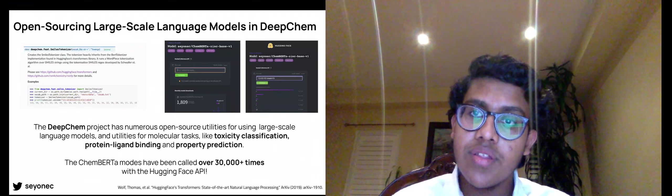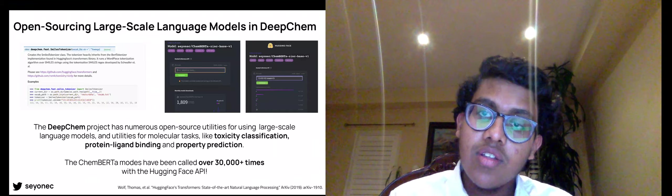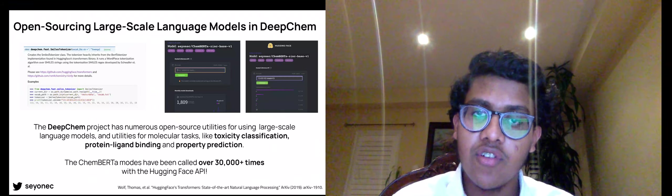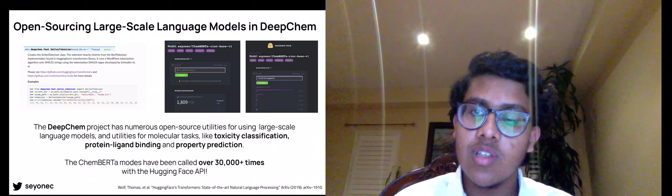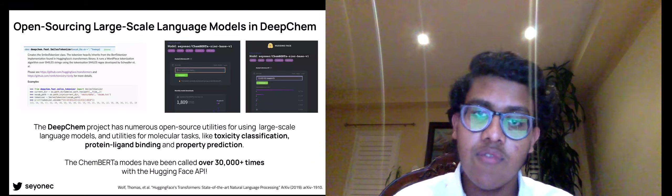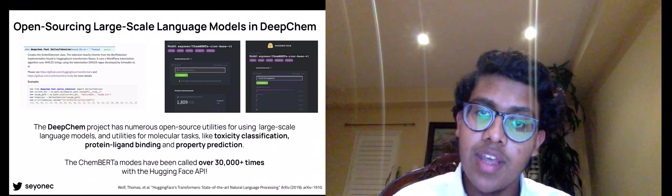We also ensure the open sourcing of all of our models and utilities for using our models through the DeepChem project, a decentralized framework for using machine learning for drug discovery spread out at the Pande Lab at Stanford. We build multiple utilities for using large scale language models, notably ChemBERTa, and many different utilities for molecular tasks, such as toxicity classification, protein ligand binding, and property prediction.